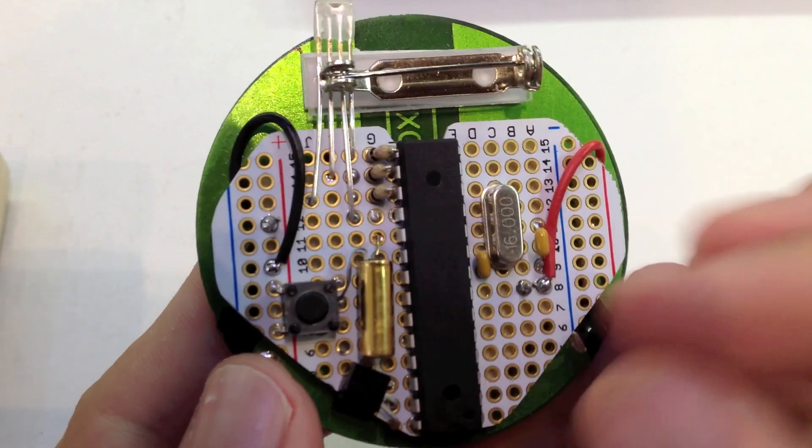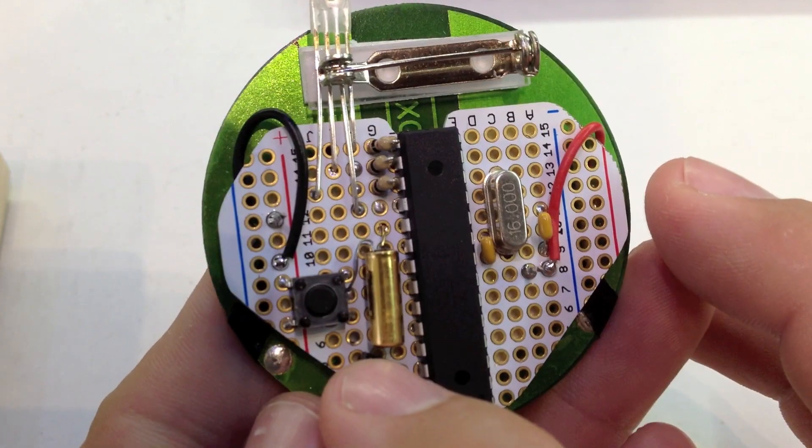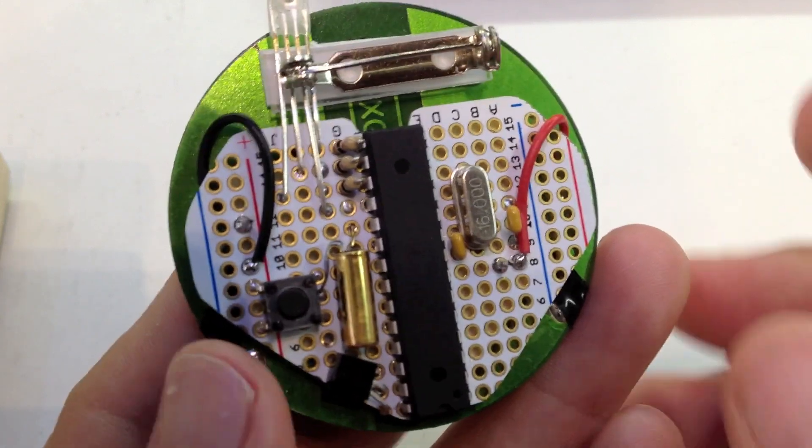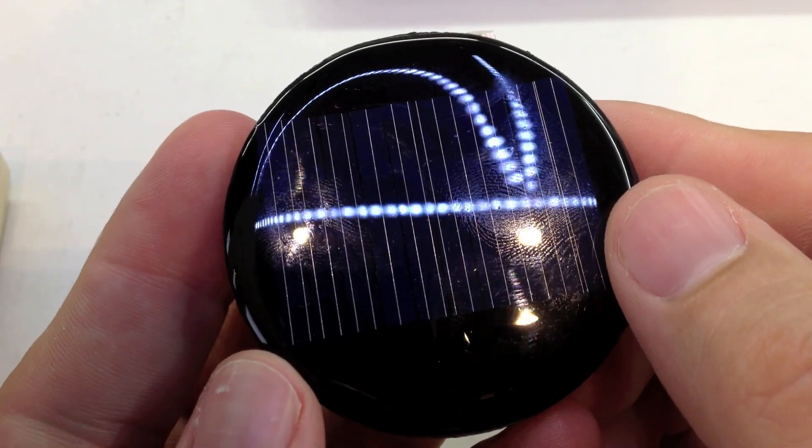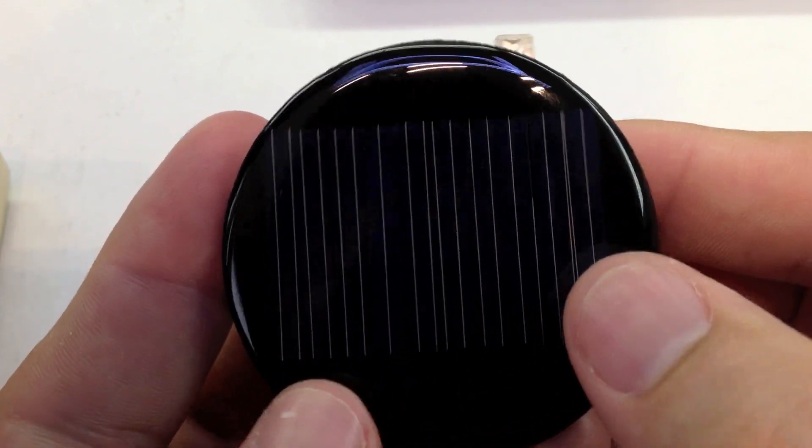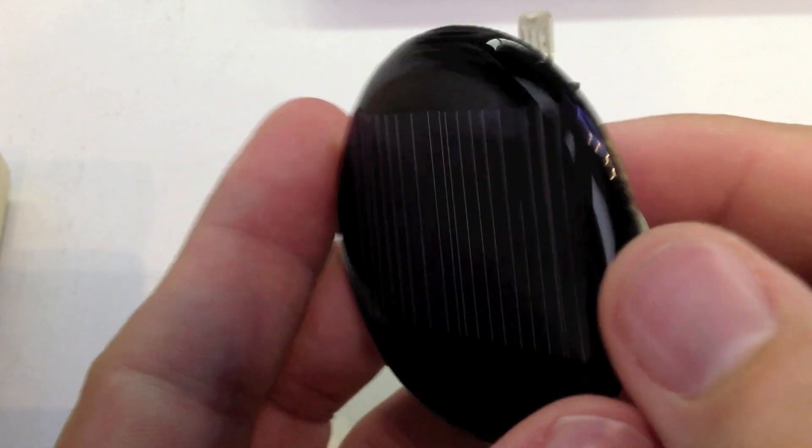And so what this guy does, as you might have guessed with the temperature sensor, is it does things by temperature. So this functions right now, but as bright a light as I have on this bench right here, I cannot reproduce the sun.